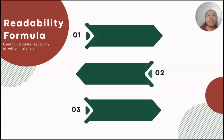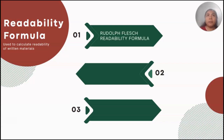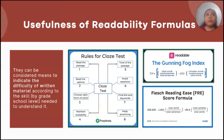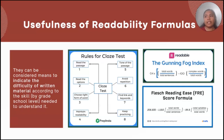However, beyond that practical measure, there are also formulas invented in order to calculate the readability of written materials. Some examples are the Rudolf Flesch Readability Formula, the Cloze Test, and the Robert Gunning Fog Index. These readability formulas are useful because they can indicate the difficulty of written material according to the skill or grade school level needed to understand it.